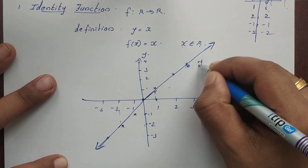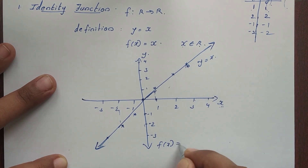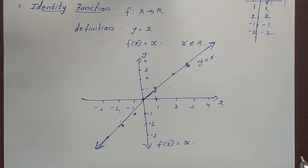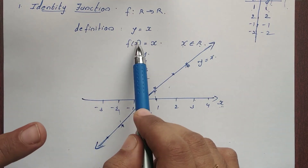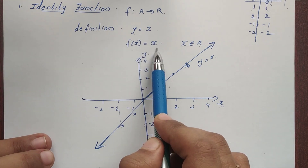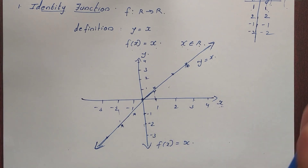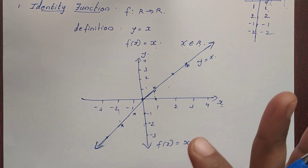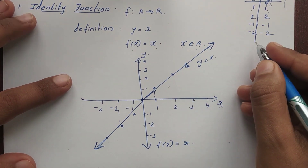The function is y is equal to x, that is f(x) = x. This is the definition: y = x, or f(x) = x. This is the graph of the identity function. Now let's look at the domain and range.